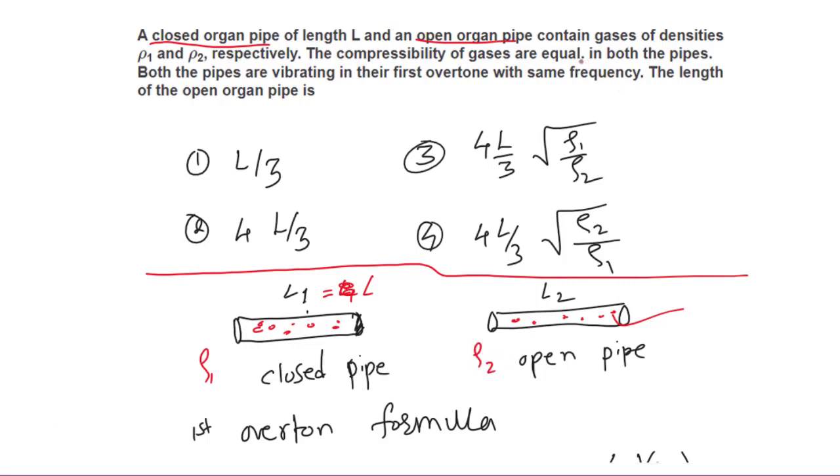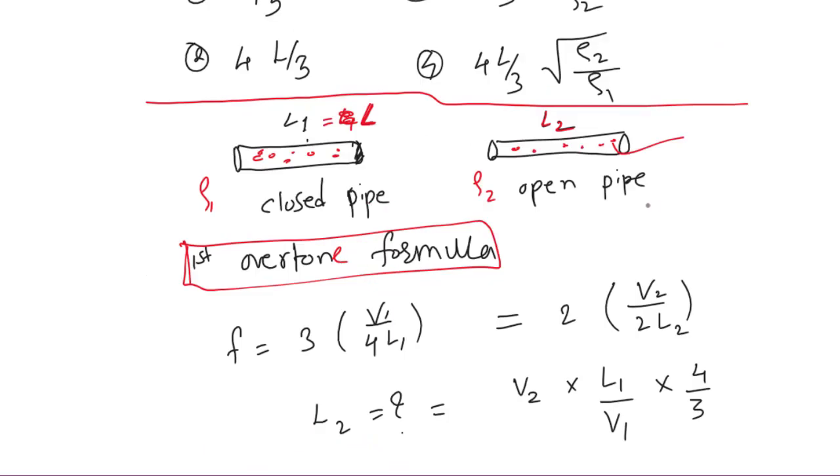The compressibilities are equal in both pipes. Both pipes are vibrating in their first overtone with the same frequency. The length of the open organ pipe is—so length of the closed pipe is given, we have to calculate length of the open pipe, let's say it is L₂.